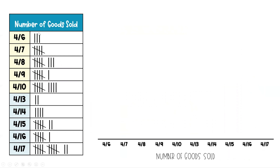On the 6th, there were three goods sold. On the 7th, five were sold. You can see for each day how many goods were sold, and on our number line we have the dates. Starting the line plot: on the 6th, there were three goods, so three X's. The 7th has five — one, two, three, four, five. On the 8th, there are eight X's.